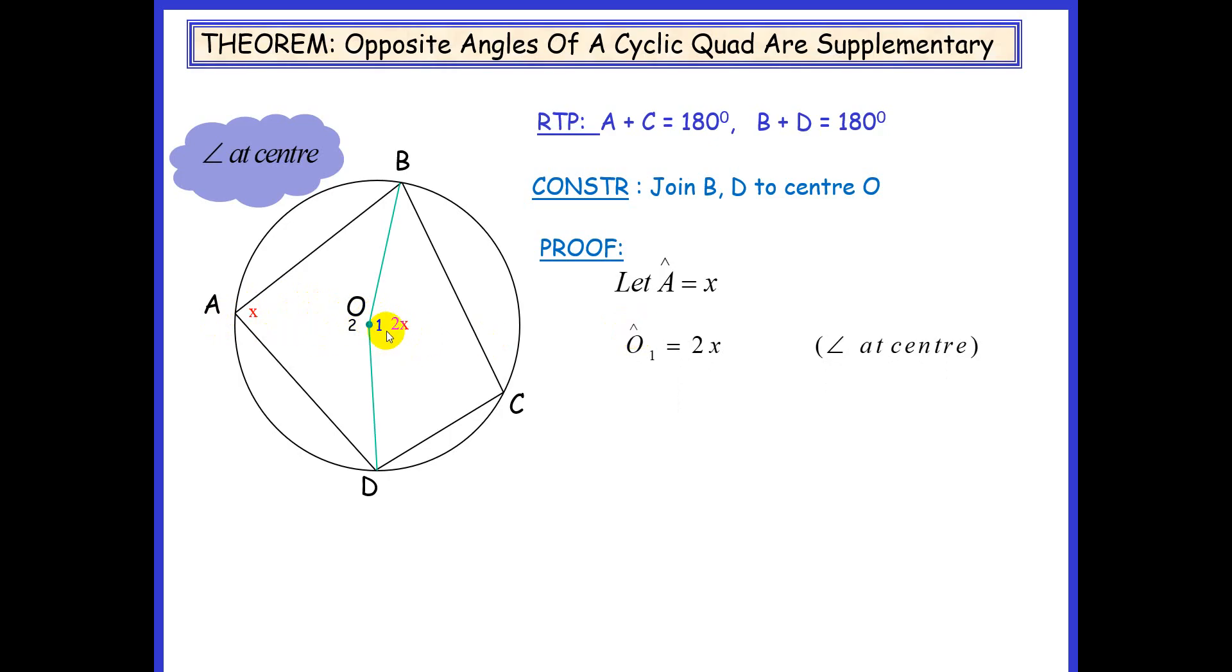Now if O1 equals 2x, we can conclude that O2 equals 360 minus 2x. Remember, this is a revolution or angles at a point.